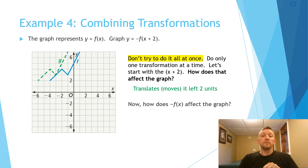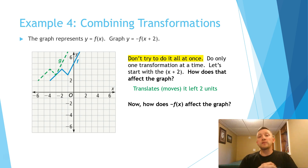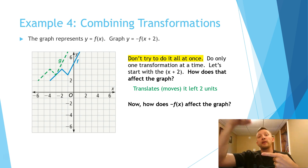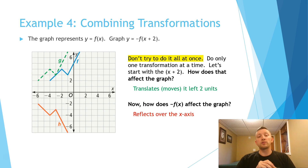Now let's look at the other part: how does negative f of x affect the graph? That means it's going to flip the graph over the x-axis. The point at negative 6, 2 flips to negative 6, negative 2. The top right point at negative 1, positive 7 flips down to negative 1, negative 7. When you graph each of those points, the final graph is the one in red — translated two units left and then flipped over the x-axis.